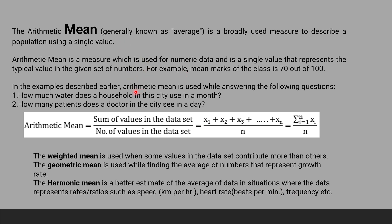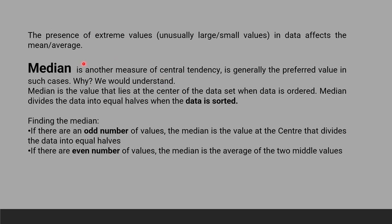We will understand mean and median together. The presence of extreme values in the data set, usually large or small, will affect the mean or average. But in case of median it won't affect because median is the center value. It first sorts the data in ascending order and then considers the central value as the median. It is another measure of central tendency, generally the preferred value in such cases.